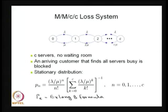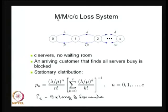Now I am moving into the fourth simple Markovian queuing model. I started with M/M/C/infinity, then M/M/1/N, then M/M/C/K, and now I am going for K equal to C — that is, the loss system. It is not a queuing system because we have C servers and the capacity of the system is also C.